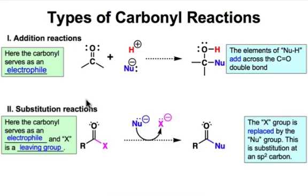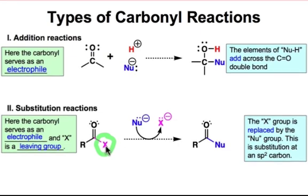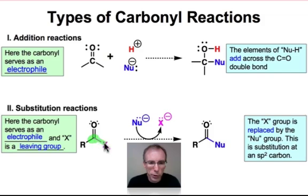The second kind of reactivity is a substitution reaction. It's going to require that there be a heteroatom substituent attached to the carbonyl carbon, and the nucleophile will come in and replace that substituent so that the nucleophile is now bound to the carbonyl carbon. Again, the carbonyl is going to behave as the electrophile, and the leaving group will be the X group. The mechanism by which substitution takes place at the sp2 carbonyl carbon is much different than the SN1 and SN2 type mechanisms that we learned for substitution at sp3 carbons.